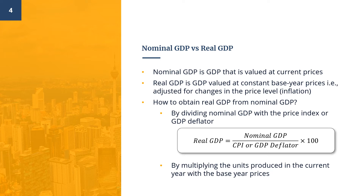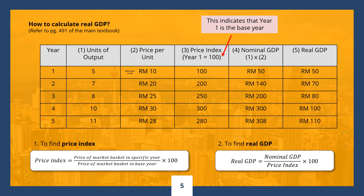There are two ways to obtain real GDP from nominal GDP. One is to simply divide the nominal GDP by the price index or GDP deflator, like so. And the other way is to break down nominal GDP into physical quantities of output and prices, and then to multiply each year's output with base year prices. Let's take a look at an example in a one-product economy. Using the first method of finding real GDP, what we need to do first is to find the price index, or column 3. This is done by dividing the price of the output in a specific year with the price of the output in the base year, and multiply by 100.